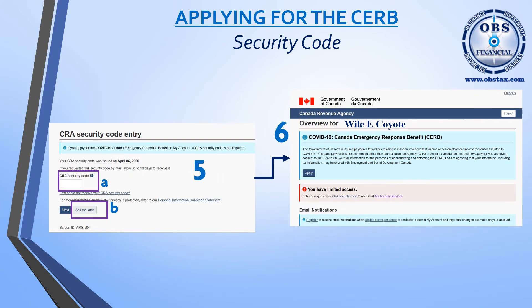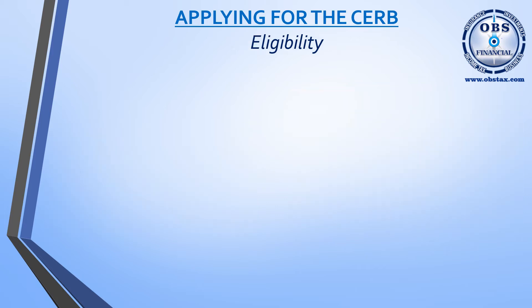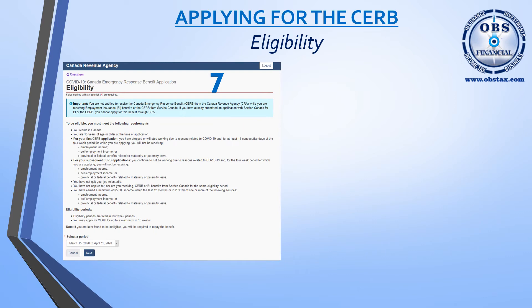Once you get to the next screen, you'll see an overview with your taxpayer name — in this case, this is for Wiley Coyote. The very first section is the COVID-19 CERB application process. In order to apply, click on the Apply button and you'll be taken to the Eligibility screen. Once you get to the Eligibility screen, you'll have to go through a series of questions or a list of things that would make you eligible.